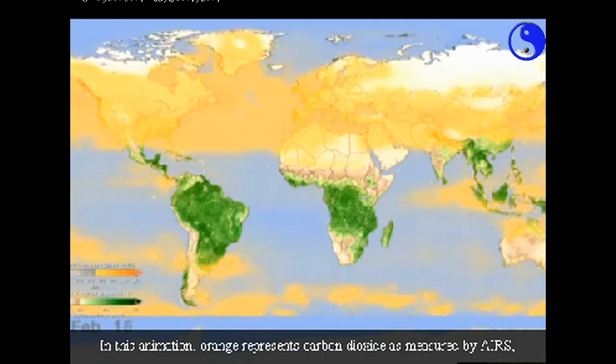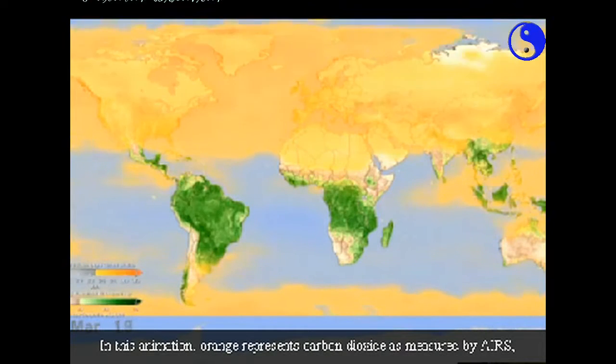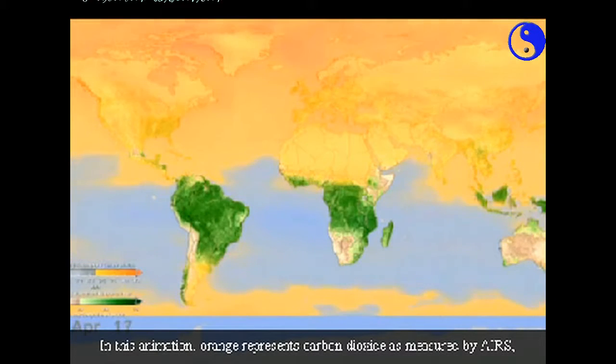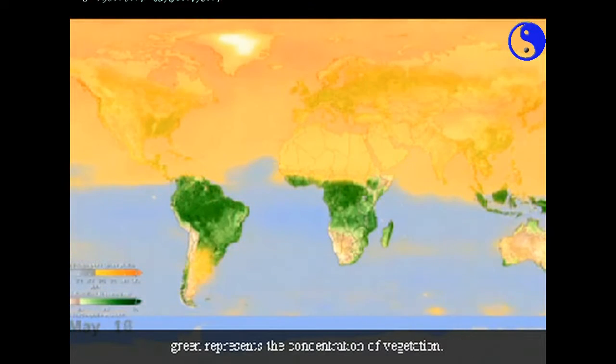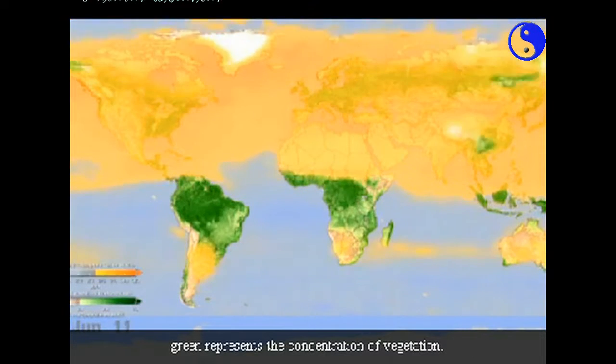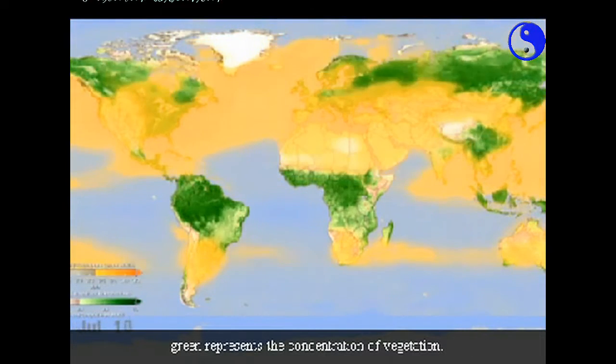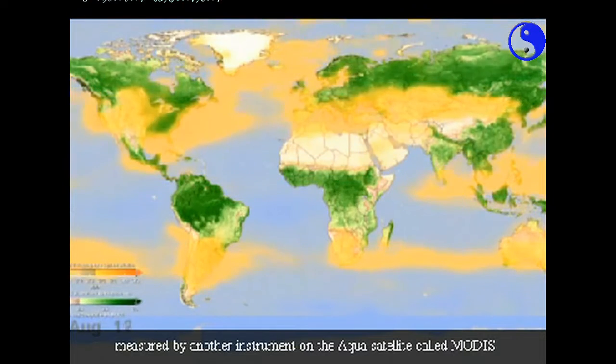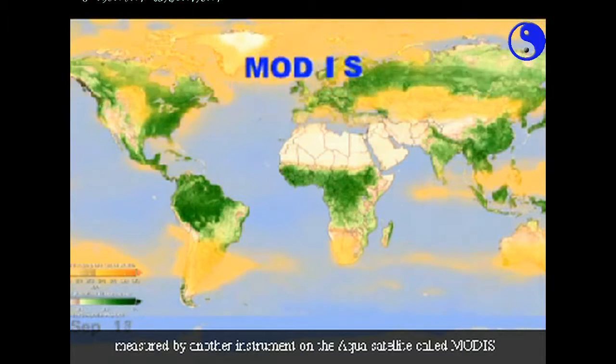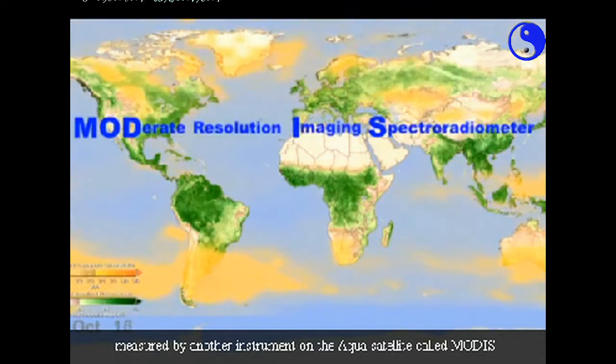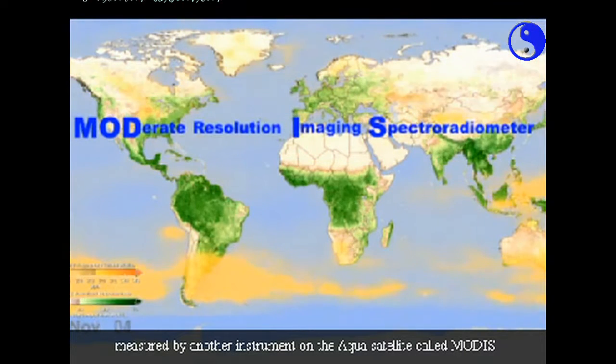In this animation, orange represents carbon dioxide as measured by AIRS. Green represents the concentration of vegetation measured by another instrument on the Aqua satellite called MODIS.